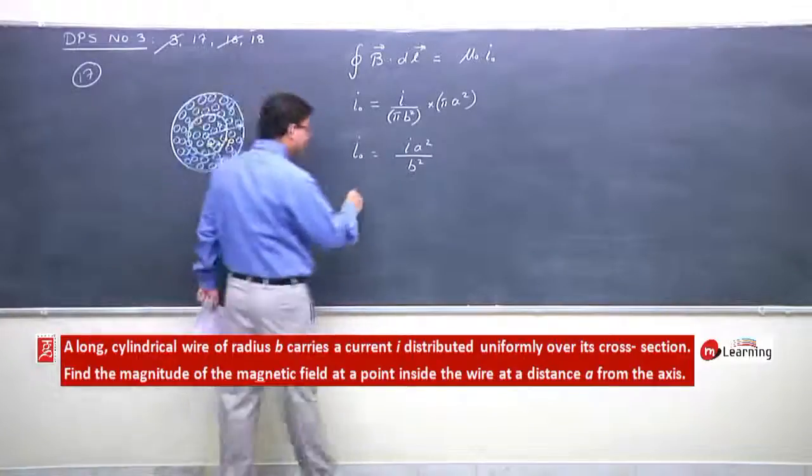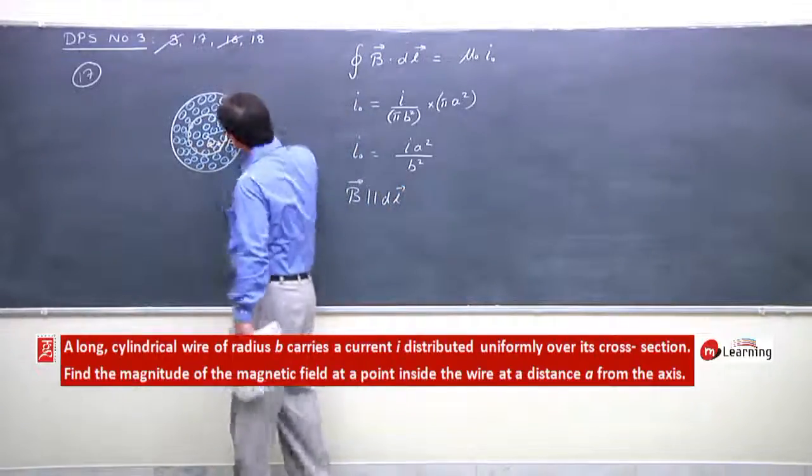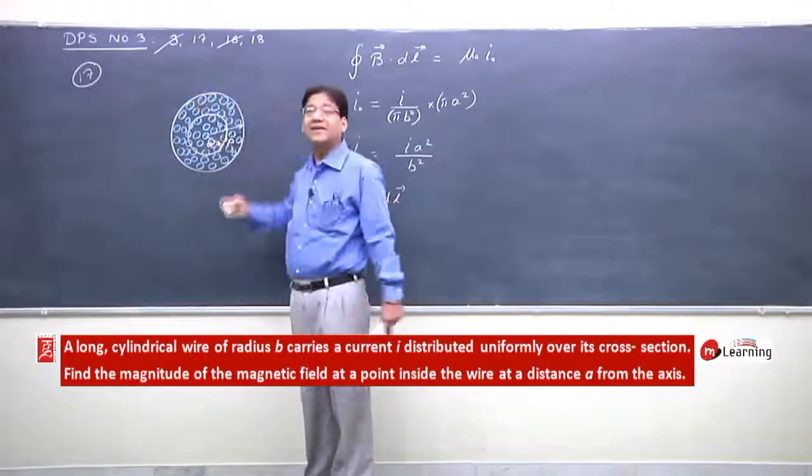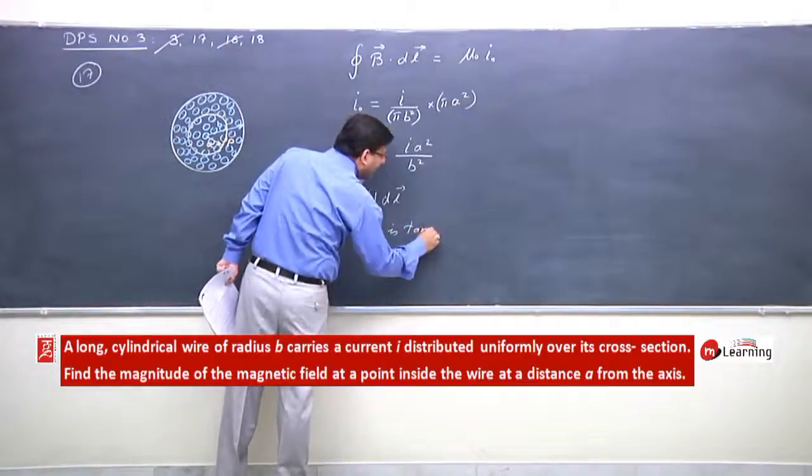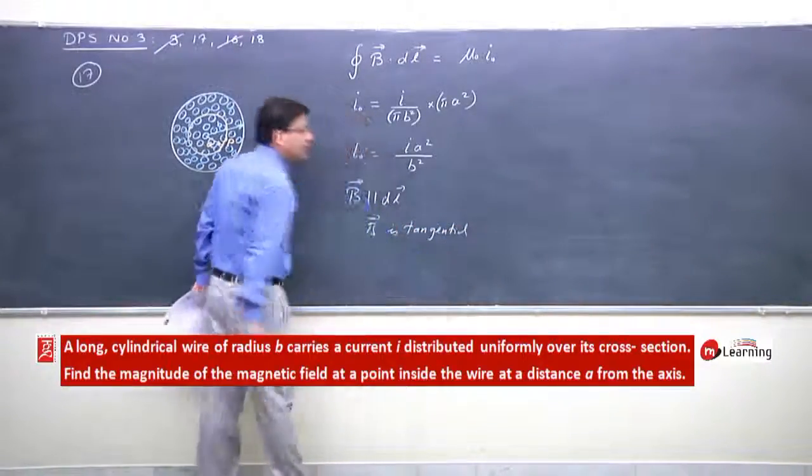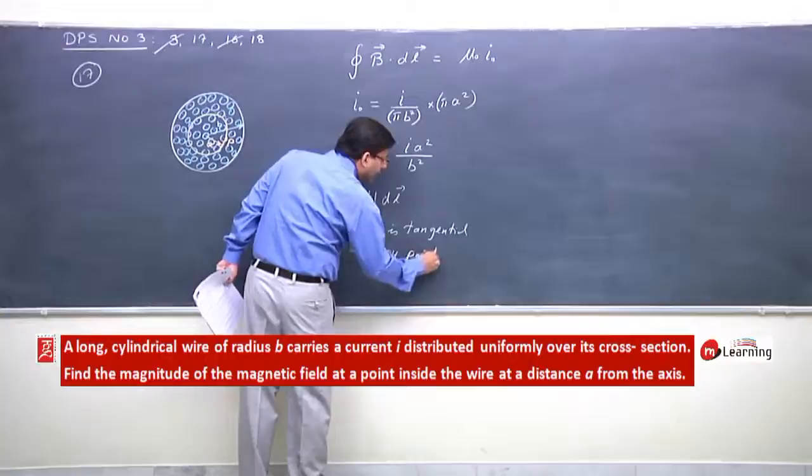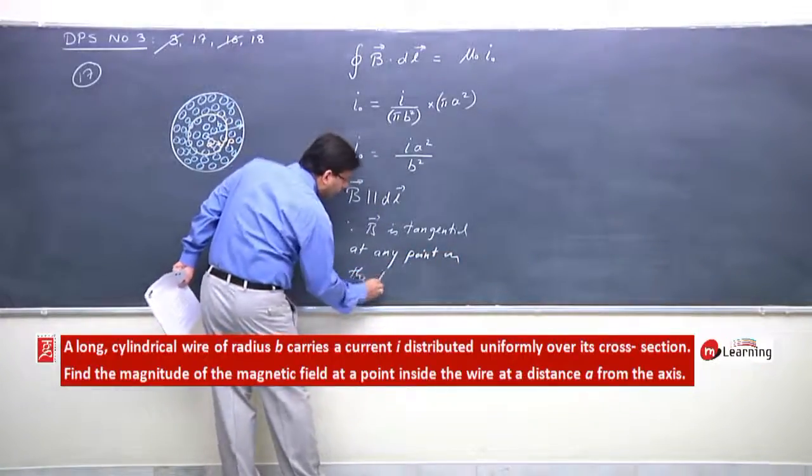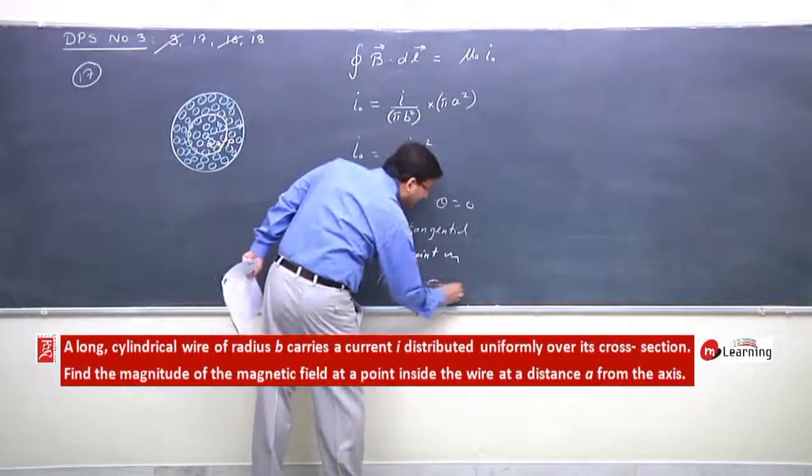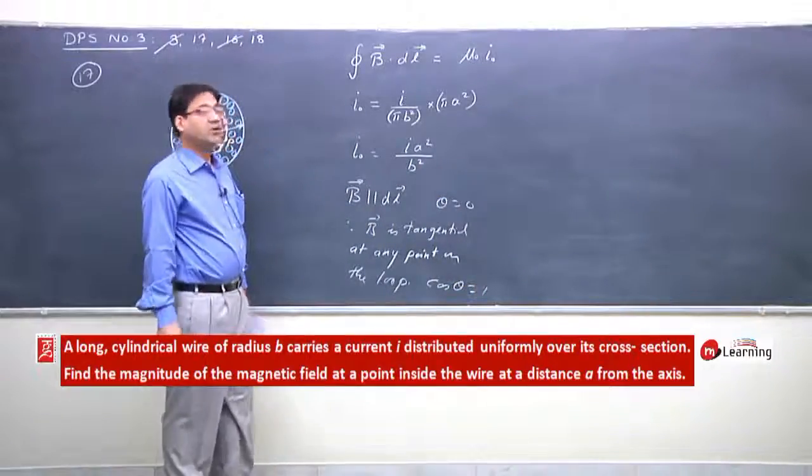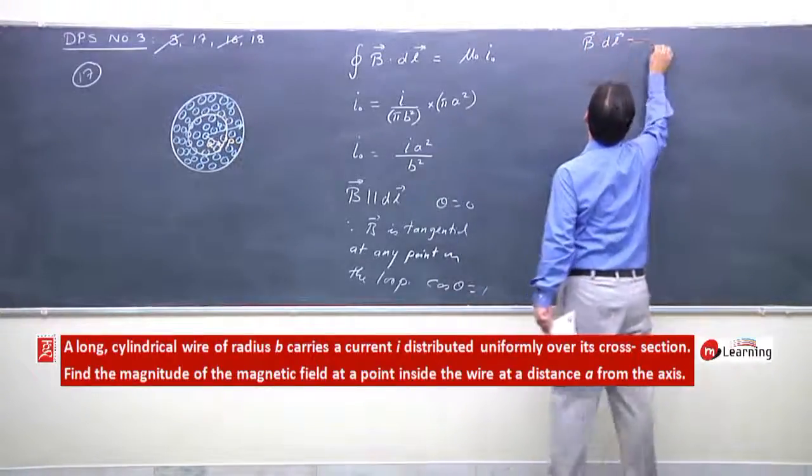Second point: B is always parallel to dL. At any point, B is always tangential. Since B is tangential at any point on the loop, theta is 0, cos theta is 1. Hence, I will say B dot dL is simply BdL.